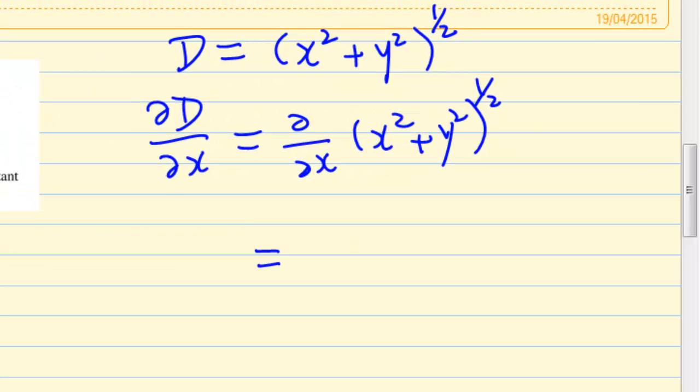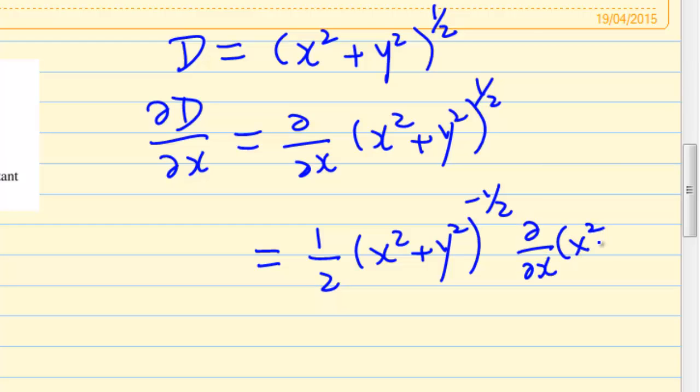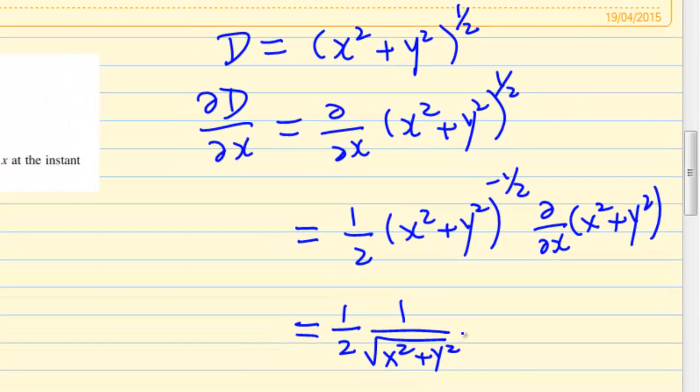Therefore, this is equal to half x square plus y square raised to the power of negative half. Then apply the chain rule and do partial differentiation of x square plus y square. This equals half times 1 over square root of x square plus y square. When you do partial differentiation of x square with respect to x, you get 2x.